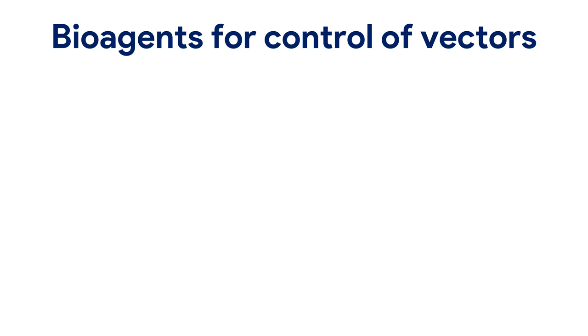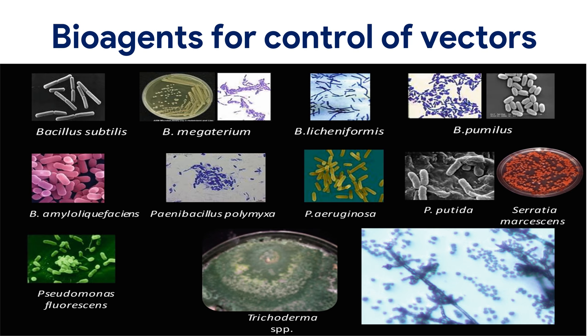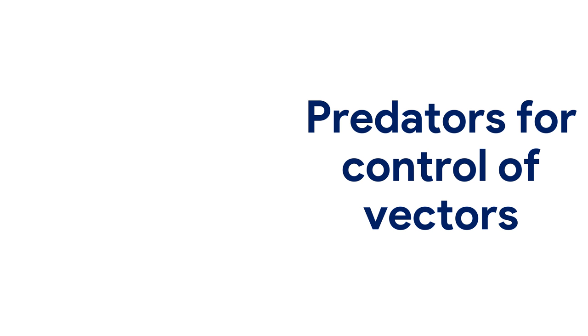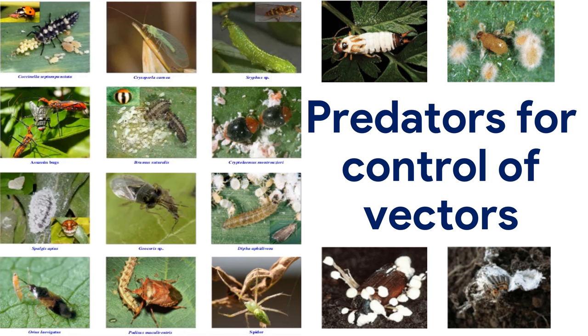Bioagents can be used for the control of vectors. Predators influence the behavior of prey and by doing so, they potentially reduce pathogen transmission by a vector. Arthropod predators have been shown to reduce the consumption of plant biomass by pest herbivores.